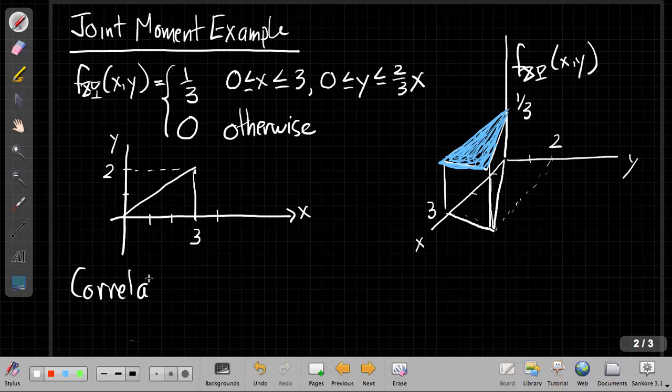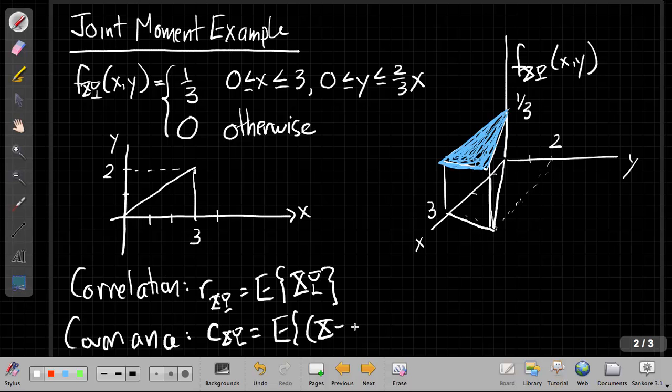Remember the correlation, which we abbreviate as R_XY, is just the expected value of the product of X and Y. We just multiply the two together and do their expected value. The covariance, C of XY, is the central moment. So I subtract the mean from X and Y before I multiply them. And we saw that this is equal to R_XY minus the expected value of X, or if I'm going to use M's for means they should be consistent. So that's R_XY minus M_X M_Y. That's the plan for today.